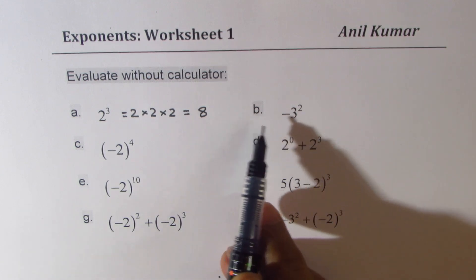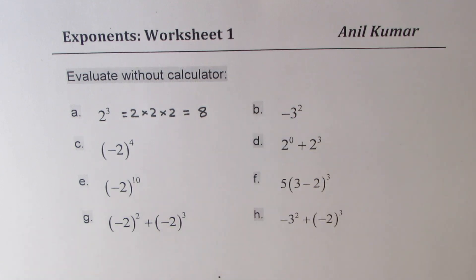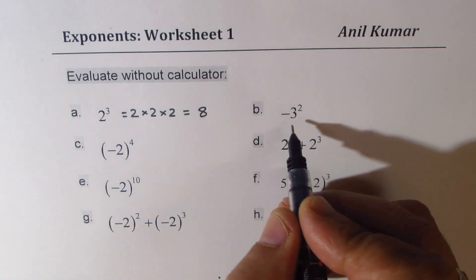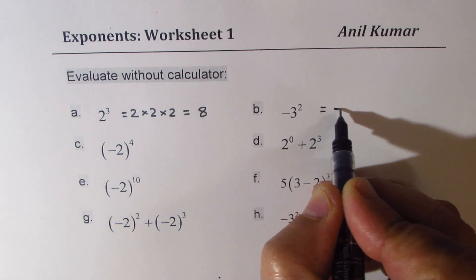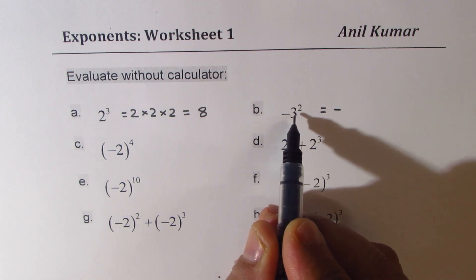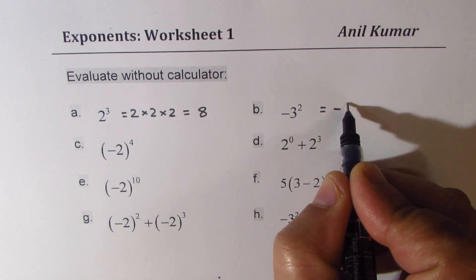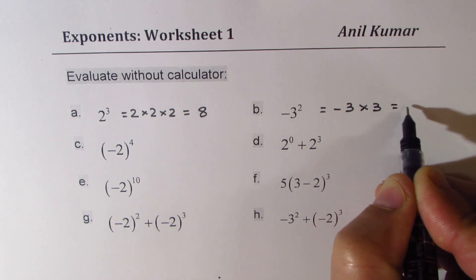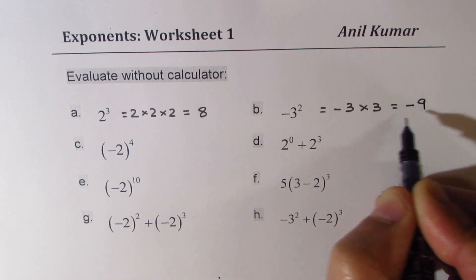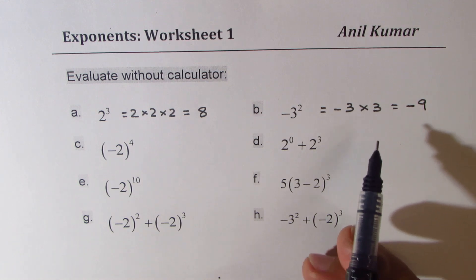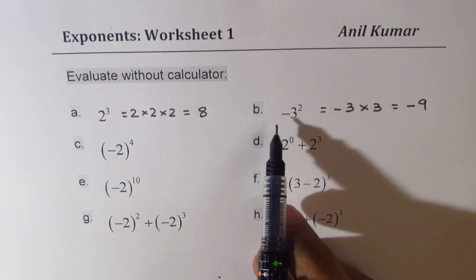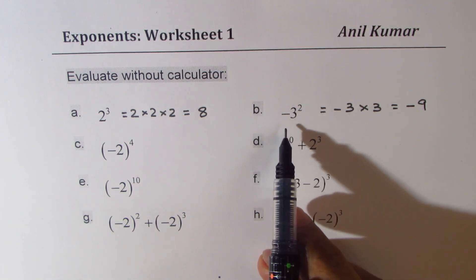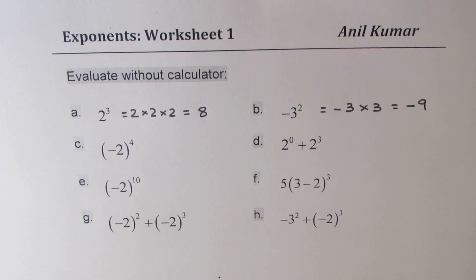Now we have b, which is minus 3 squared. So when the exponent is 2, you call it square. Now that really means minus is not squared — only 3 is squared. So it is 3 times 3, and that gives you the answer as minus 9. Many students sometimes do minus 3 times minus 3 and land up with the wrong answer.